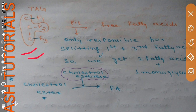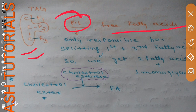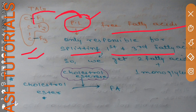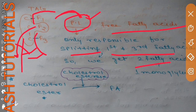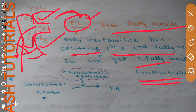Pancreatic lipase acts on triacylglycerol and generates free fatty acids. An important point is that pancreatic lipase is only responsible for splitting the fatty acids at the first (sn-1) and third (sn-3) positions; the second position is not cleaved. So the products are two free fatty acids (F1 and F3) plus one monoglyceride.